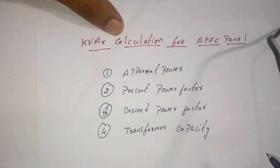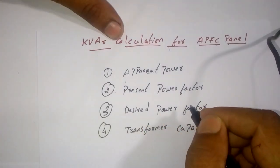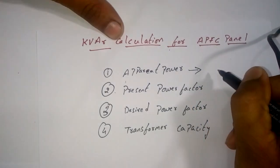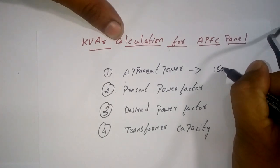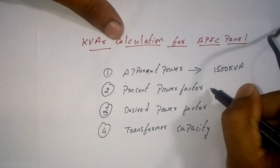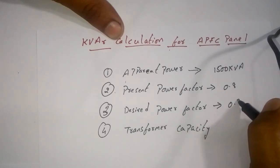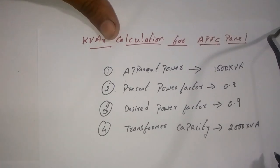Let us consider a scenario and figure out how the APFC panel calculation is done at site or in a substation. Let's say the apparent power or maximum load at the site is 1500 kVA, the present power factor at the site is 0.8, and the desired power factor is 0.9.